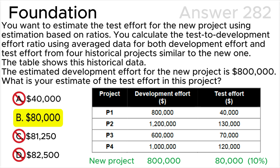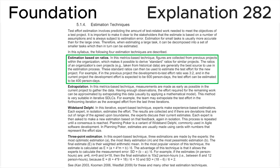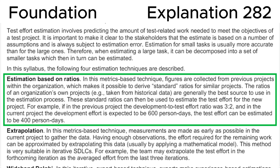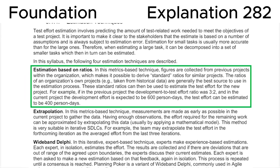My recommendation: please remember all the estimation techniques to pass the ISTQB exam. Let's look at section 5.1.4, estimation techniques, in the ISTQB syllabus. It states that estimation based on ratios is a metrics-based technique where figures are collected from previous projects within the organization, making it possible to derive standard ratios for similar projects. Ratios taken from historical data are generally the best source to use in the estimation process. These standard ratios can then be used to estimate the test effort for the new project. This is fully consistent with our calculation and the correct answer B.